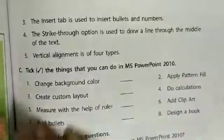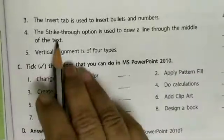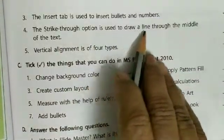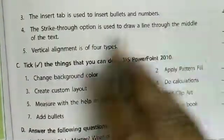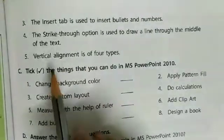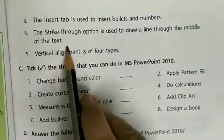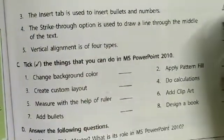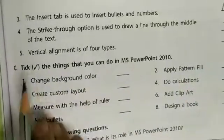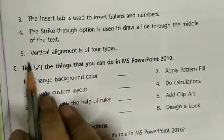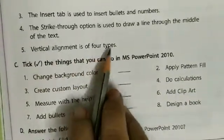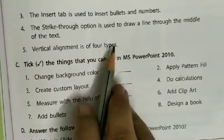Fourth: the strikethrough option is used to draw a line through the middle of the text. Yes, this is correct — put a tick mark. Write T for True.